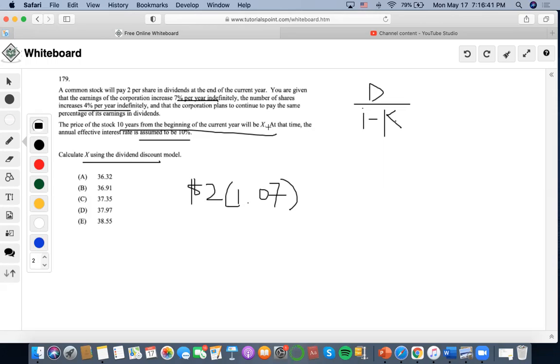Yeah, so first things first is that we see that our earnings percentage is 7%. Earnings. And we also see that the number of shares increase by 4%.